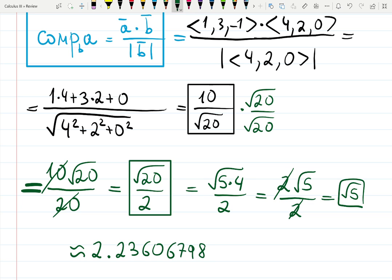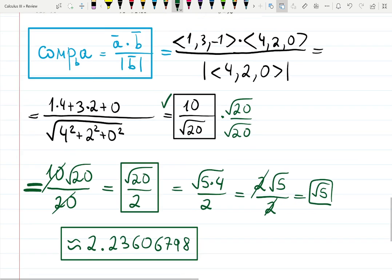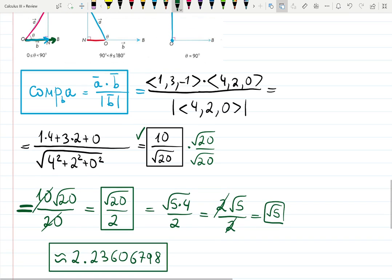Then it's 2.23606798, but usually we don't ask about the approximation. Square root of 5 will be the best answer, or 10 over square root of 20. And that's what we hope that you remember about the scalar and vector projections. Thank you.